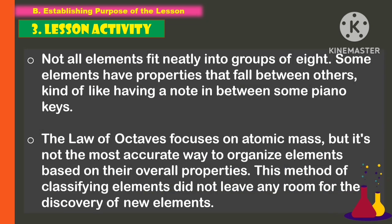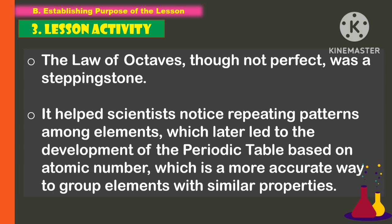Not all elements fit neatly into groups of eight. Some elements have properties that fall between others — kind of like having a note in between some piano keys. The Law of Octaves focuses on atomic mass, but it's not the most accurate way to organize elements based on their overall properties. This method of classifying elements did not leave any room for the discovery of new elements. The Law of Octaves was not perfect, but it was a stepping stone. It helped scientists notice repeating patterns among elements, which later led to the development of the periodic table based on atomic number — a more accurate way to group elements with similar properties.